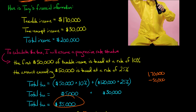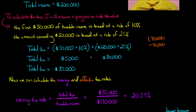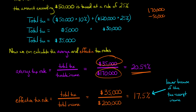Now that we know the tax, we can calculate both rates. For the average tax rate, we take the total tax of $35,000 divided by taxable income of $170,000. That gives an average tax rate of 20.59% (rounded).